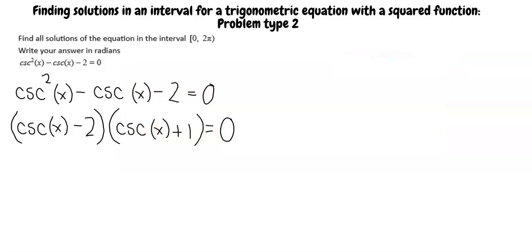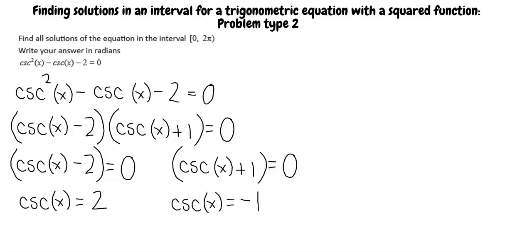Now we can set each factor equal to 0. What do we get if we solve for cosecant of x in each equation? We get cosecant x equals 2 and cosecant x equals negative 1. Great work! Now what do we do?